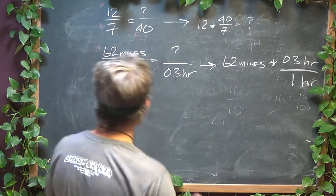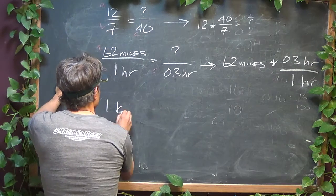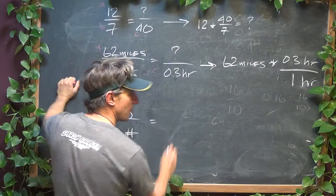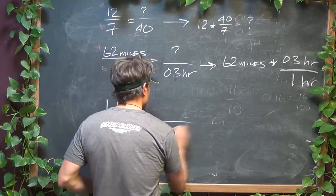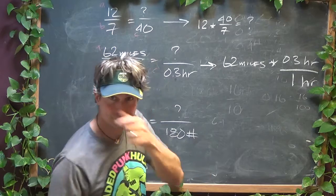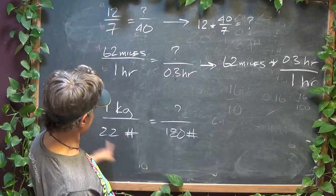And last but not least, a kilogram is the same as approximately 2.2 pounds. If I'm 180 pounds, which I am, how many kilograms am I? Okay? So you got your ABC.